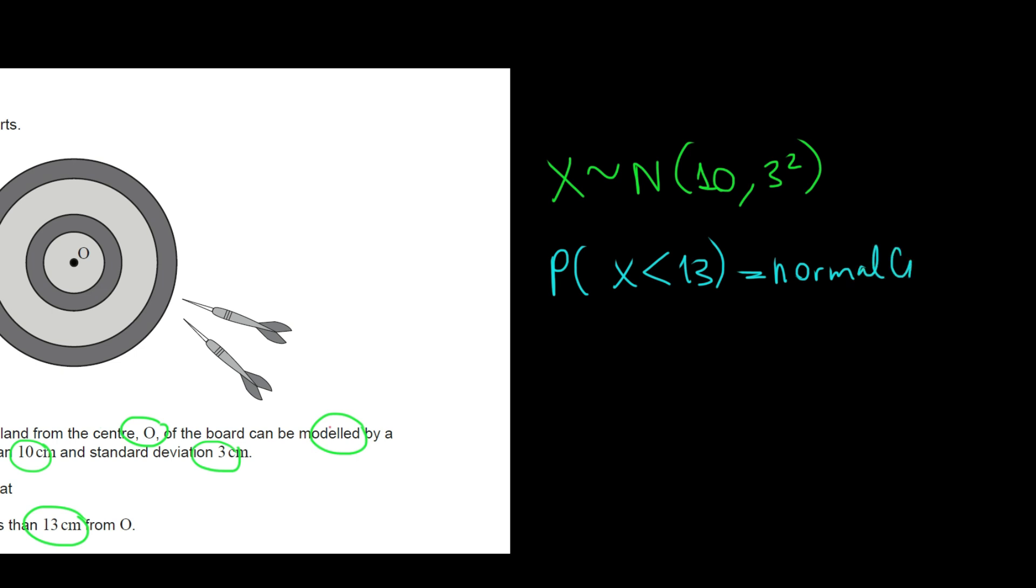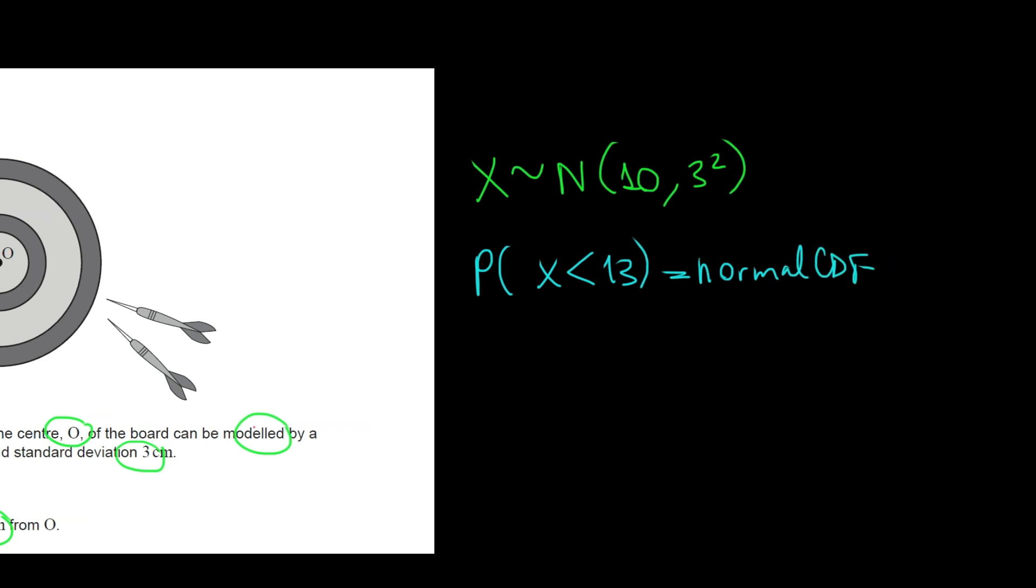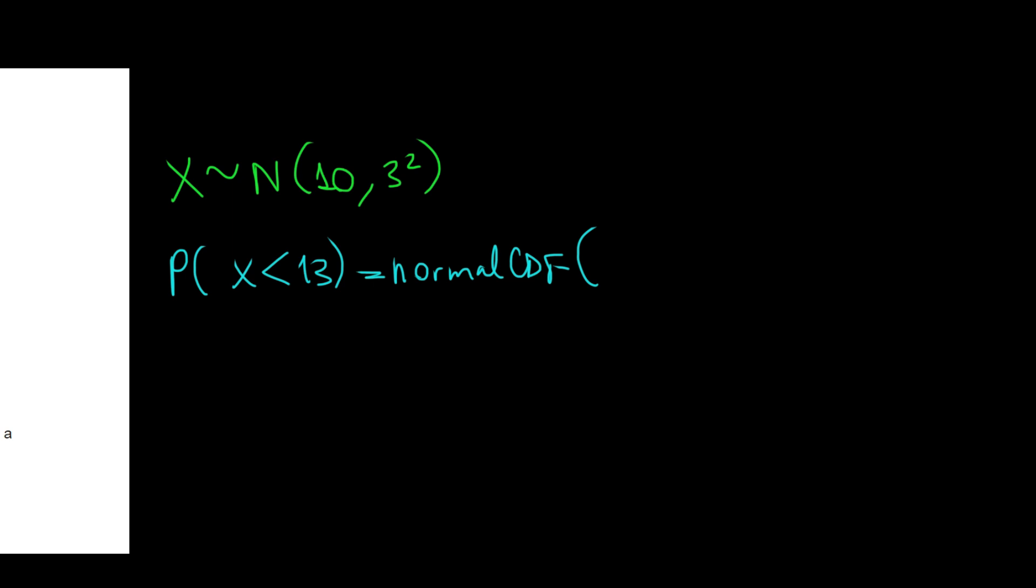We do the normal CDF. We put in the bracket the lower bound, upper bound, all that stuff. So the lower bound I'll put minus infinity, upper bound I'll put 13, the mean is 10, standard deviation is 3. I work this out, I would get 0.841 to 3 significant figures.